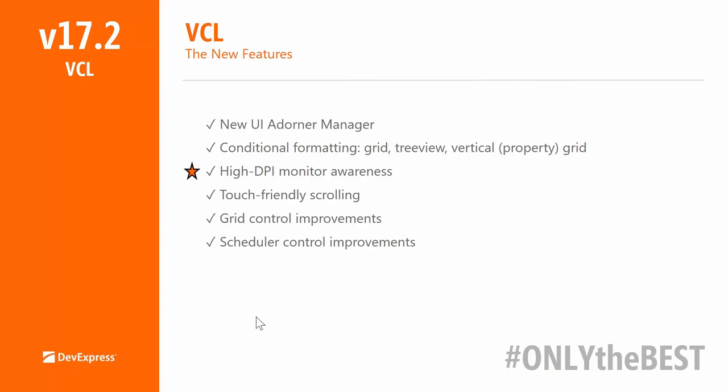Next up, we've added full conditional formatting to our grid-like controls: the grid itself, the tree view or tree list, and the vertical grid, also known as the property grid. Conditional formatting is Microsoft Excel-like formatting of individual cells, rows, or columns based on conditions you express through a rules manager. Sounds complicated? Not really — I'll show you in a moment.